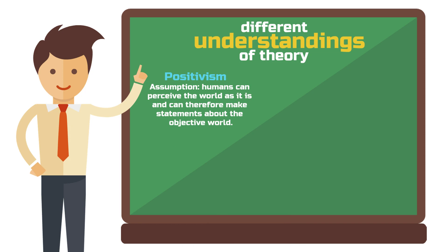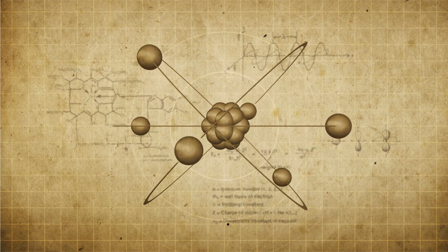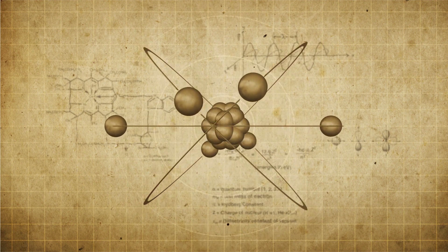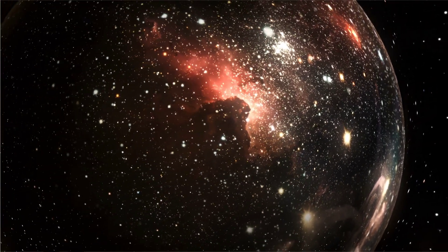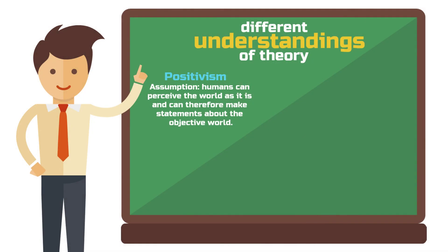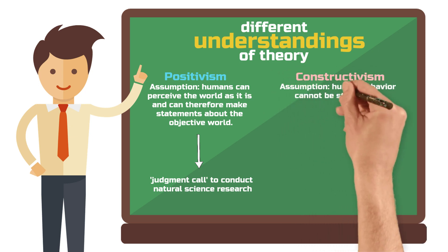In the natural sciences, these assumptions are not questioned so much because, to put it bluntly, the probability that we live in a matrix and that the laws of nature do not reflect the objective world is rather low. If scientists were to question the assumption that there is some sort of objective world outside of our minds, it would be very hard to conduct natural science research at all. But in the social sciences, this epistemological standpoint has often been criticized. The reason for this is that the research objective here is different, for example, human behavior.